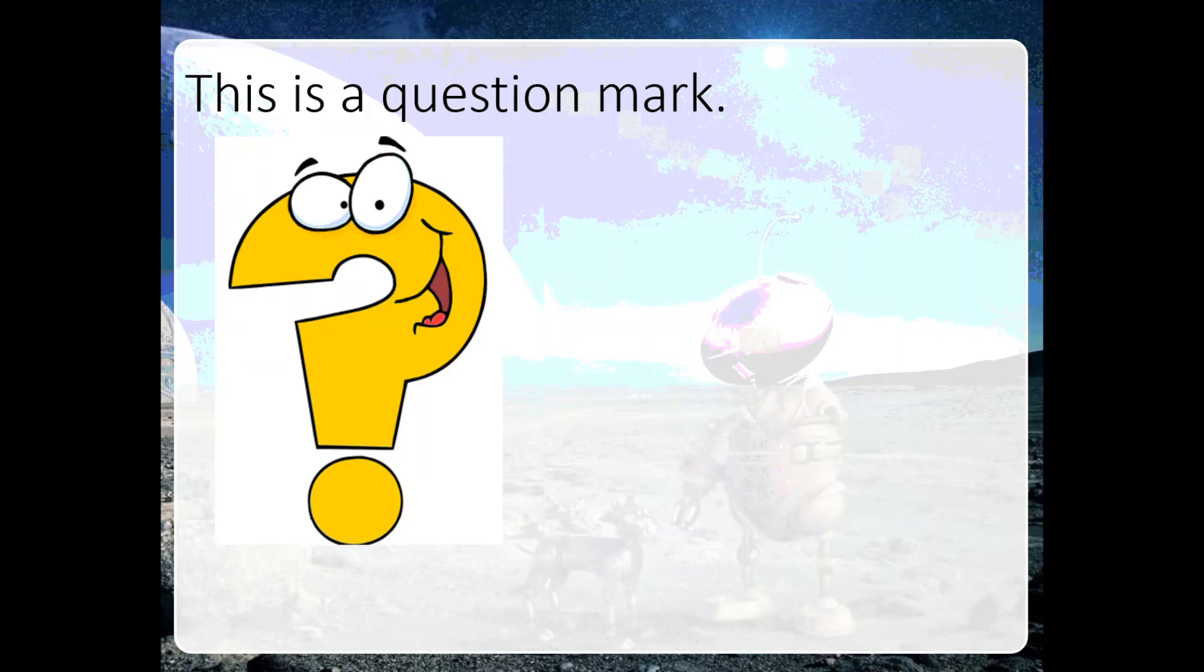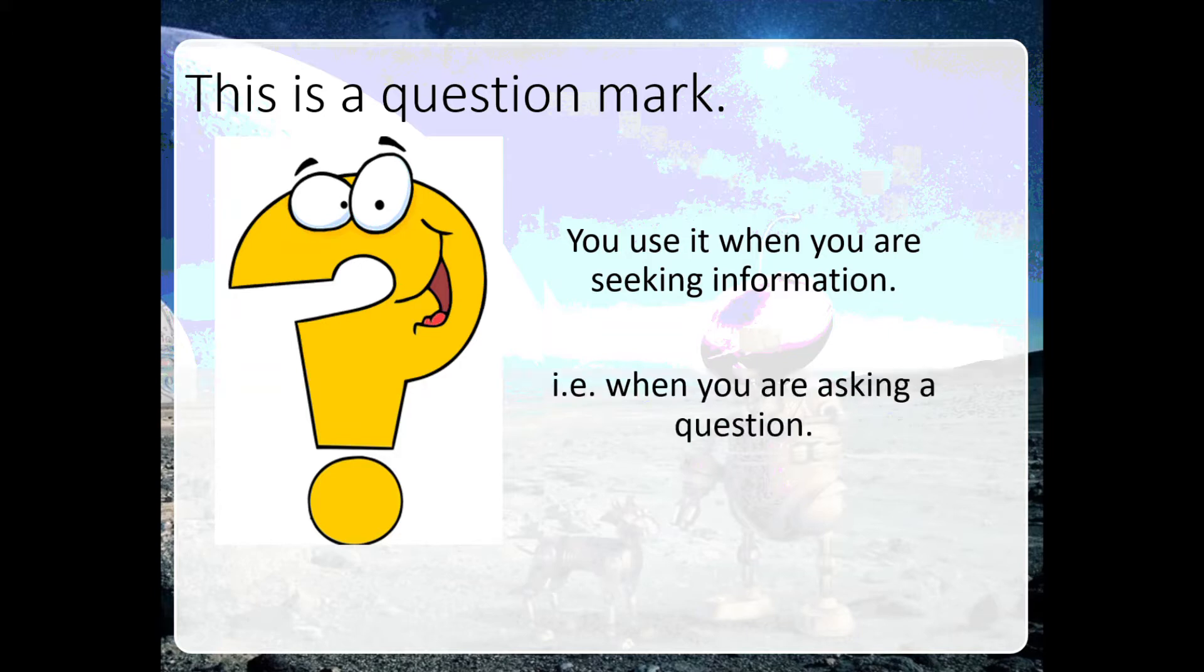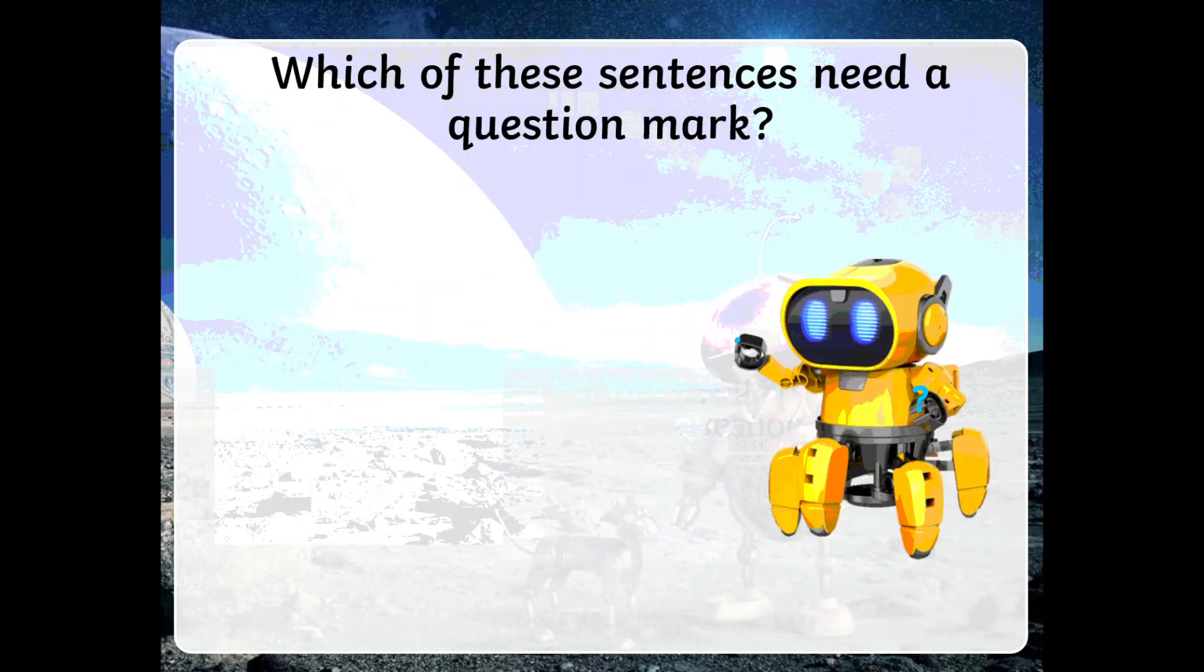Okay, so this happy chappy is a question mark, and question marks are used when you're seeking information. That basically means when you're asking a question. So which of these sentences need a question mark?